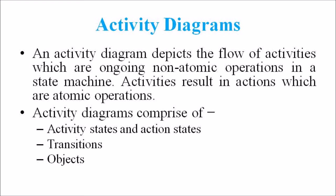Next we are discussing the Activity Diagram. An Activity Diagram depicts the flow of activities which are ongoing non-atomic operations in a state machine. Activities result in actions which are atomic operations. The Activity Diagram comprises of activity state and action state, transitions, and objects.